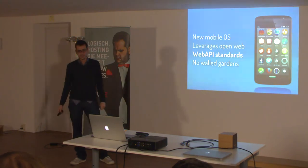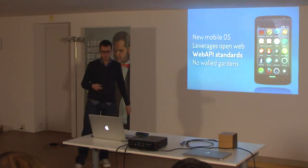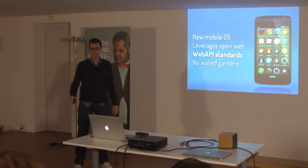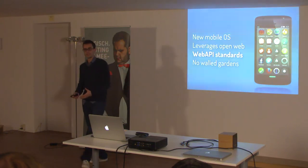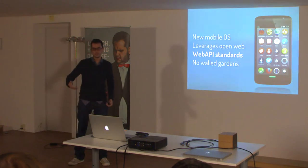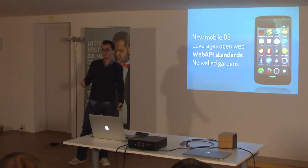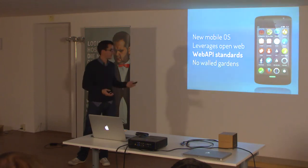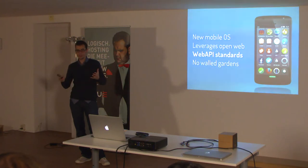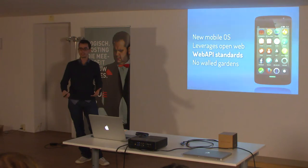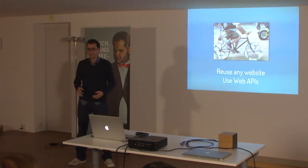Mozilla started this whole effort by proposing web API standards to the W3C. Some have already been approved — for example the Vibration API is already in Chrome, and other browsers are preparing for them. But the main thing about Firefox OS is that it's a Trojan horse. Mozilla doesn't want to just sell a lot of Firefox OS phones — what they want is to create pressure so that everybody else has to adopt the standard web APIs, just as Firefox forced other vendors to use standards.